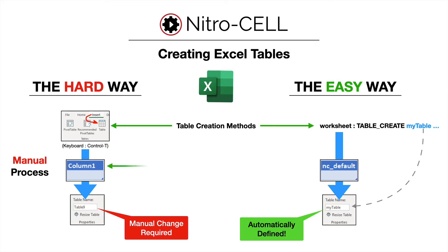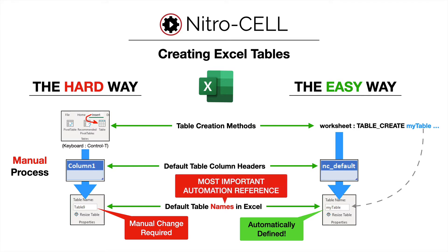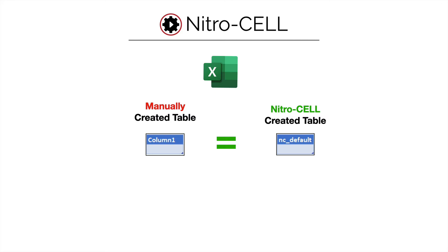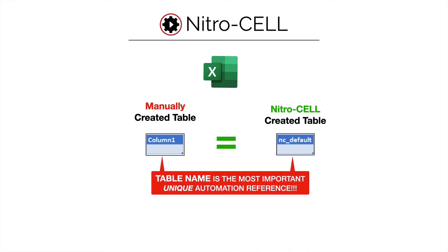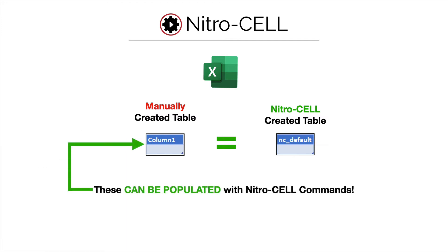The table creation methods are equivalent — the column headers are basically the same — but the NC underscore default prefix is a clear indication that NitroCell generated it. The table name is identified up in the toolbar and is the most important automation reference; you always must remember that. NitroCell considers a manually created table and a NitroCell created table in their default conditions to be the same. Make table names short, obvious, and easy to identify, so if you manually create one, rename it to something meaningful for easier NitroCell automation reference later.